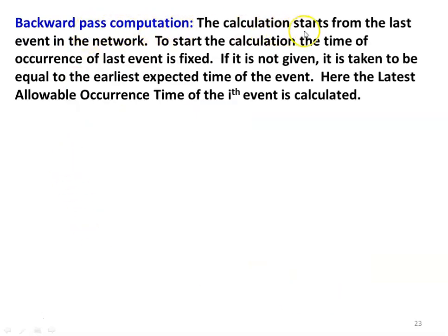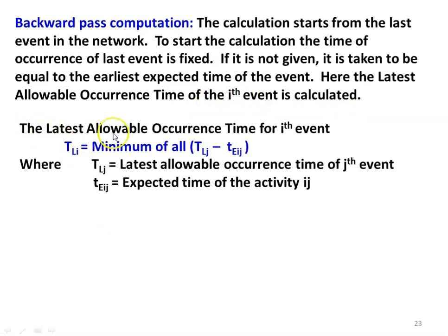In the backward pass computation, calculation starts from the last event in the network. In the forward pass computation, we start from the initial event; in the backward pass computation, we start from the last event. The time of occurrence of the last event is fixed — if given in the problem, we take that value; if not given, it is taken to be equal to the earliest expected time of the event. The latest allowable occurrence time of the ith event: TL_i equals minimum of all TL_j minus te_ij, where TL_j is the latest allowable occurrence time of the jth event.